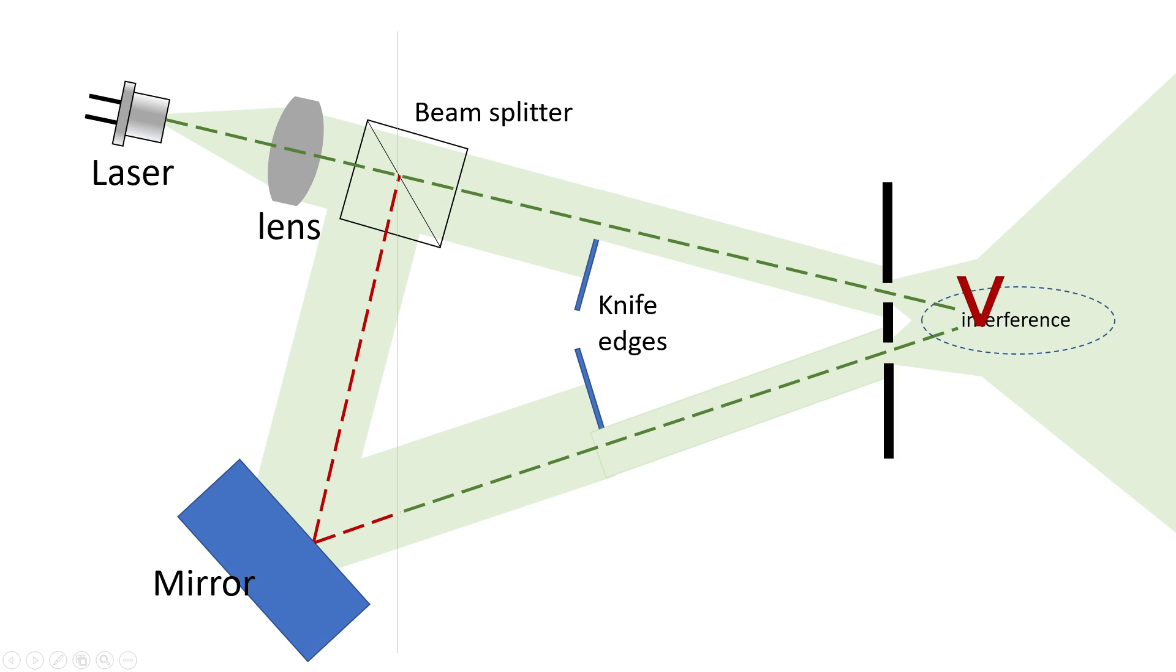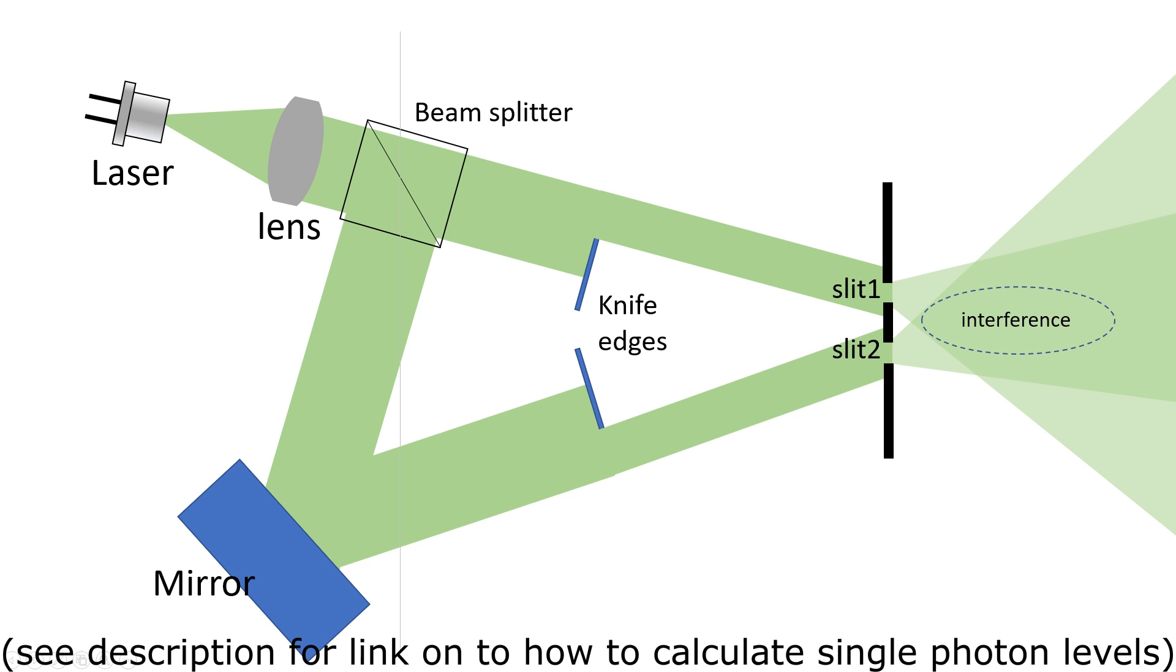Well, there is only one way to find out if this is really single photon interference. And that is to go down to single photon intensity levels. So, what I did was make sure that there is just one photon in the beam at any time. And this is fairly simple.